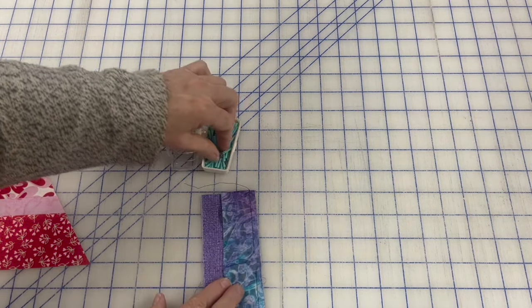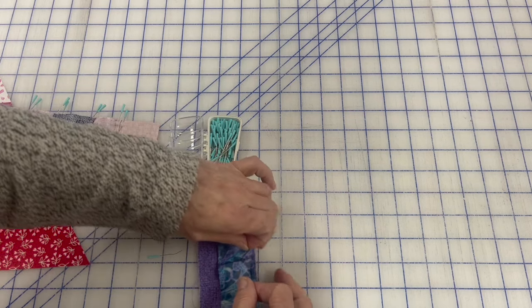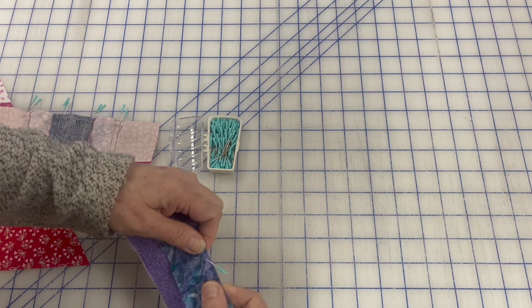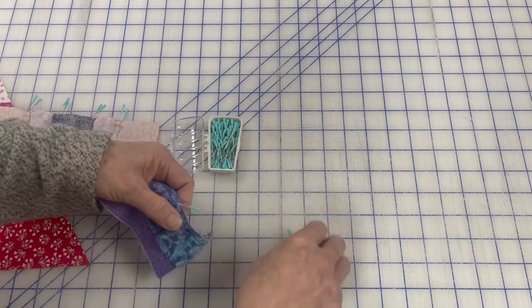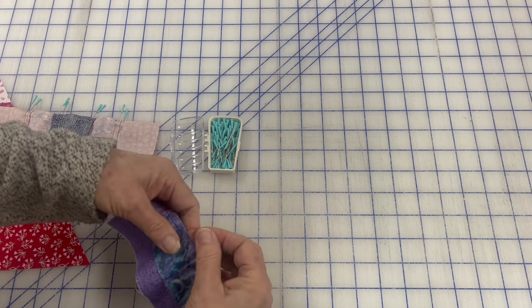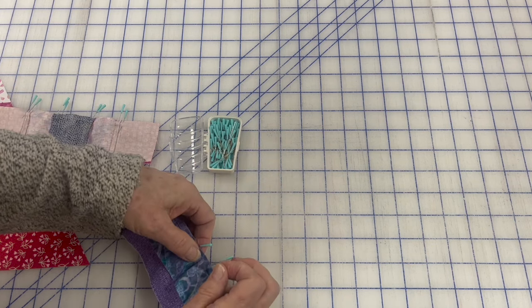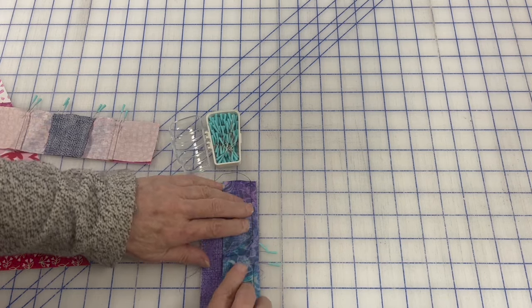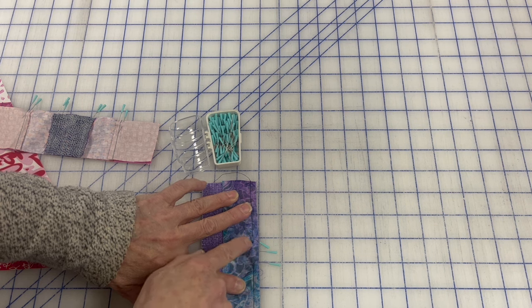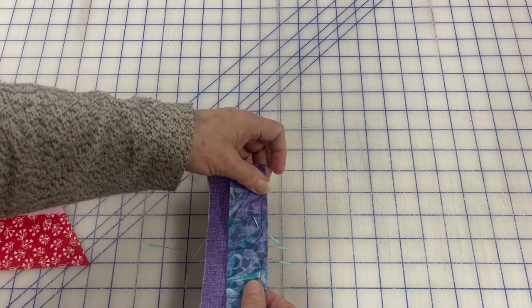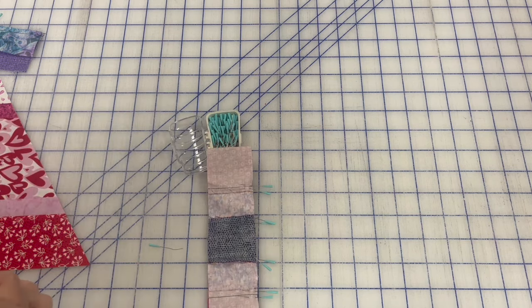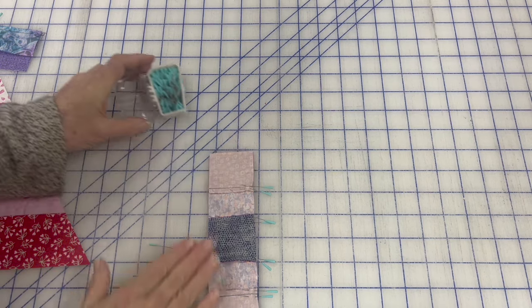So what I would do in this case is take pins. Now again, these have to be pins you can sew over. If you have big fat pins, this is not going to work. But I'm just going to put in pins so that any excess fabric is distributed evenly across the open part. So I would now go to the sewing machine and sew this down, and I should not have a pleat anymore because there's a little excess here, a little excess here, and should be good to go.